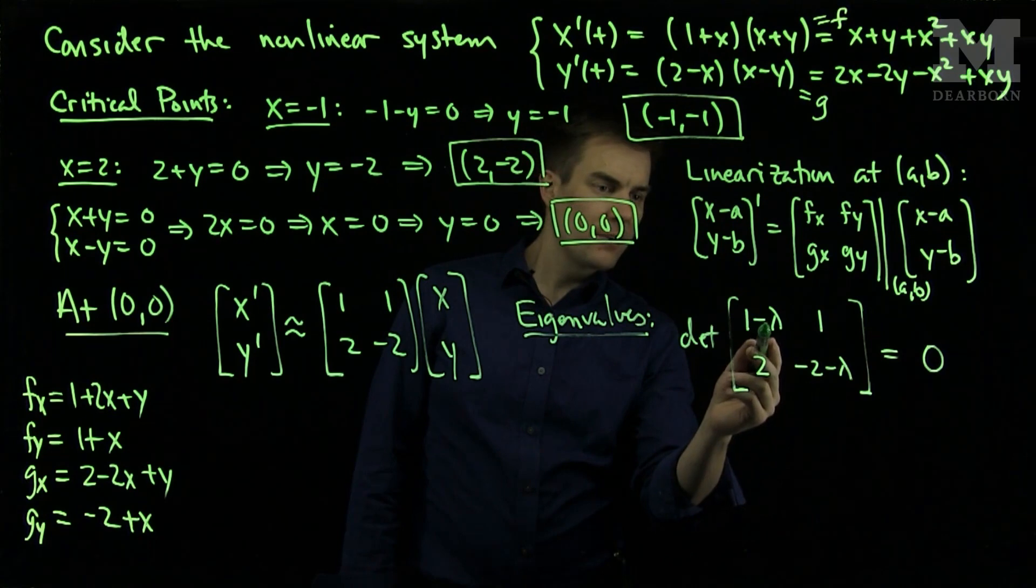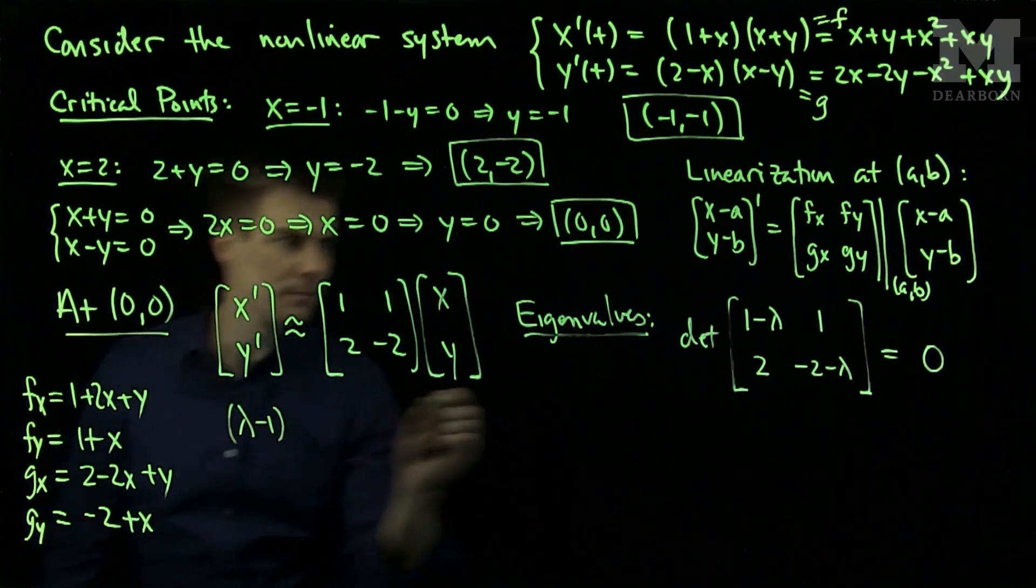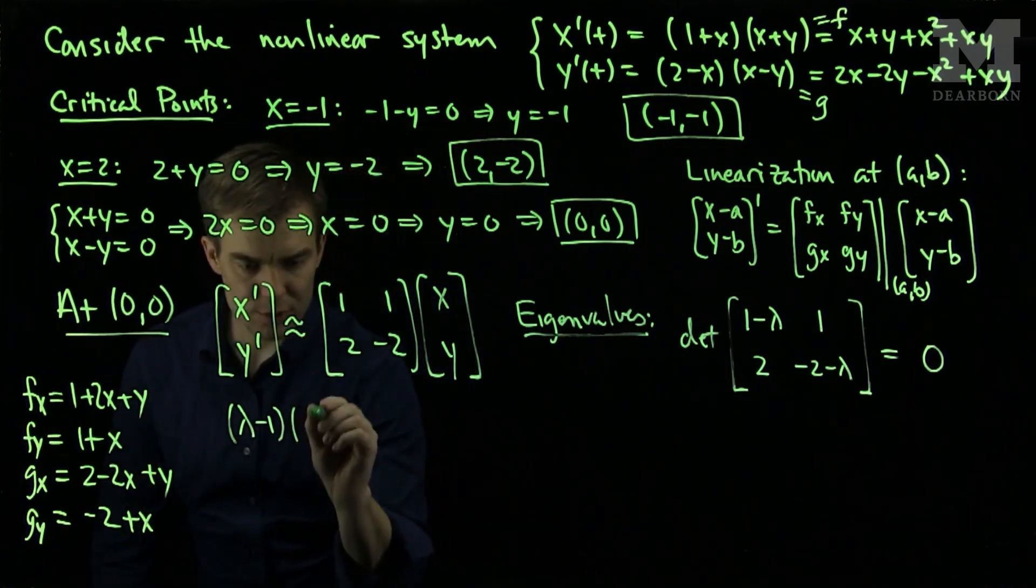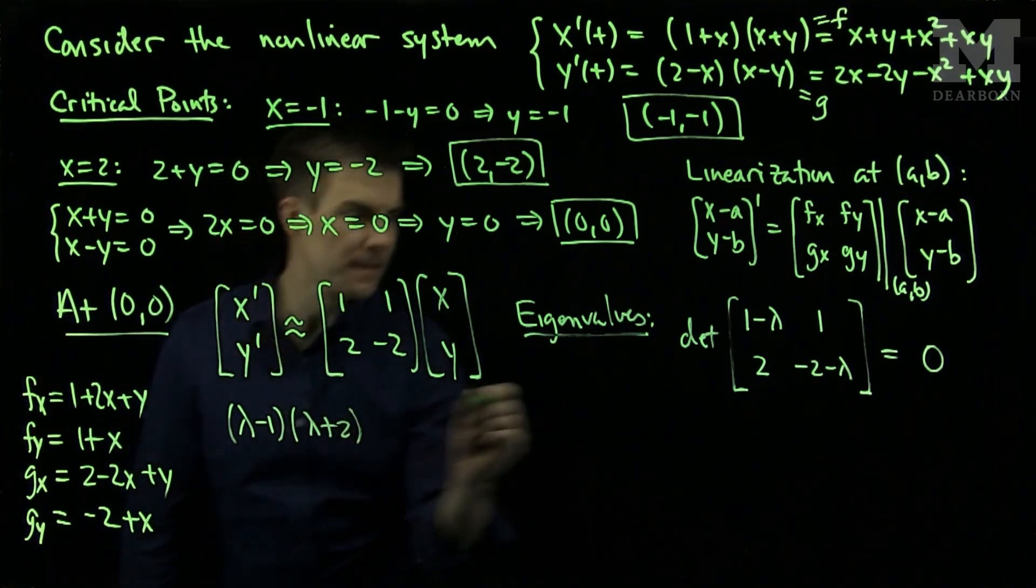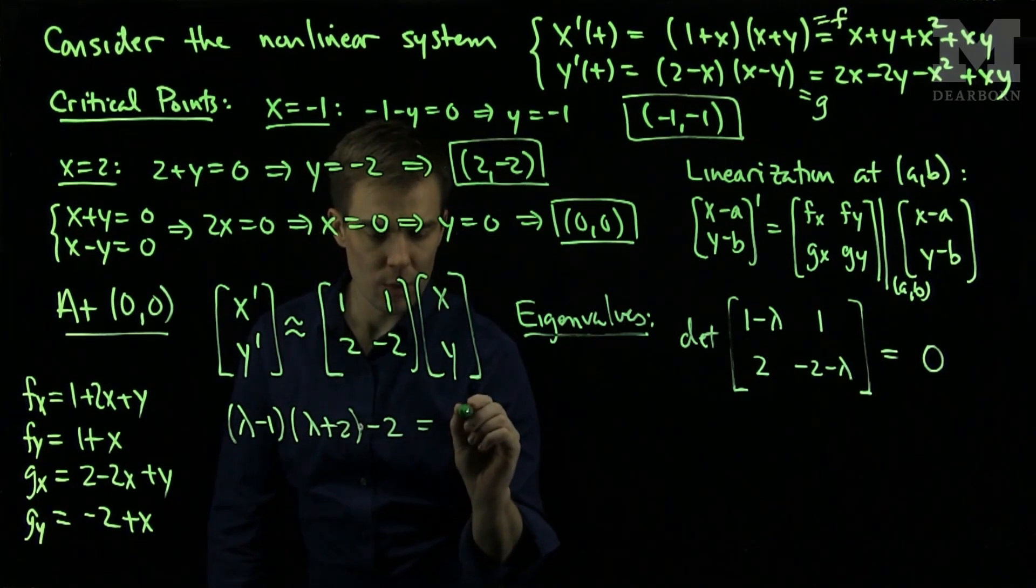So what I will have is I will have a lambda minus 1 and a lambda plus 2, and then I'll have a minus 2 equals zero.